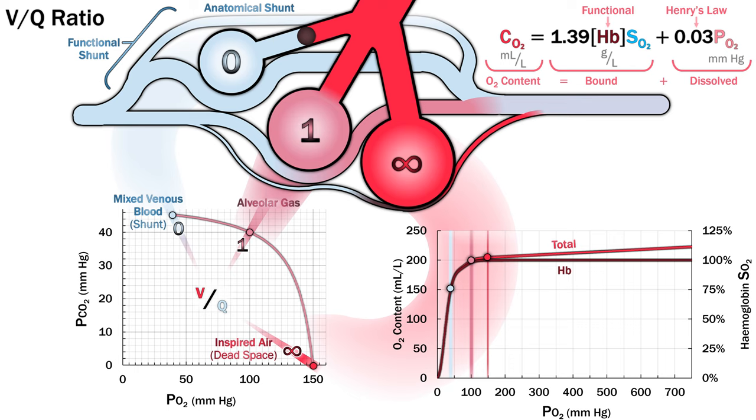We want to know what the oxygen content of the final systemic arterial blood will be. We can immediately discount the dead space units because they aren't perfused. Our pulmonary embolism patient is hypoxic because they diverted blood to more lung units with a VQ ratio less than 1.